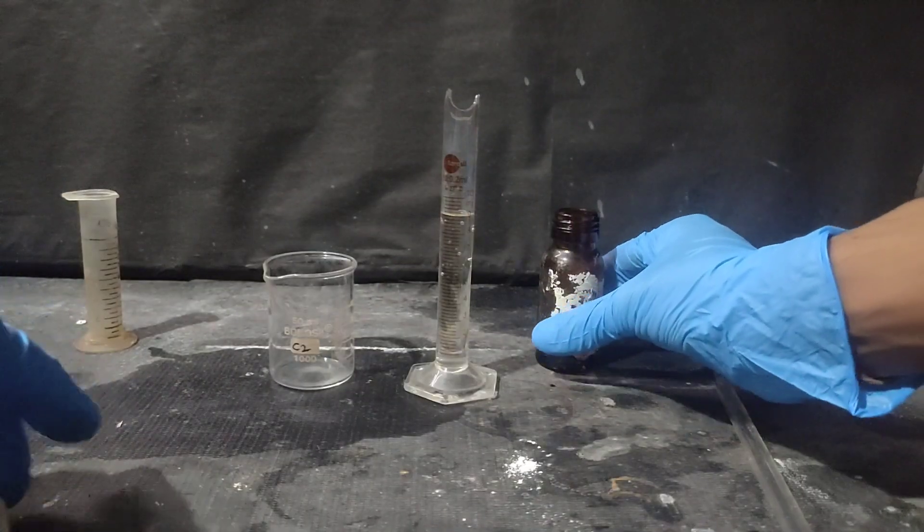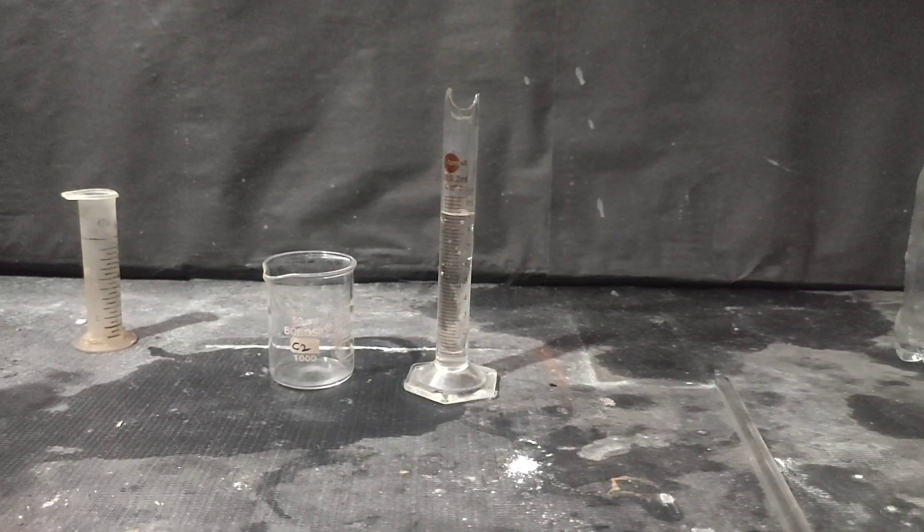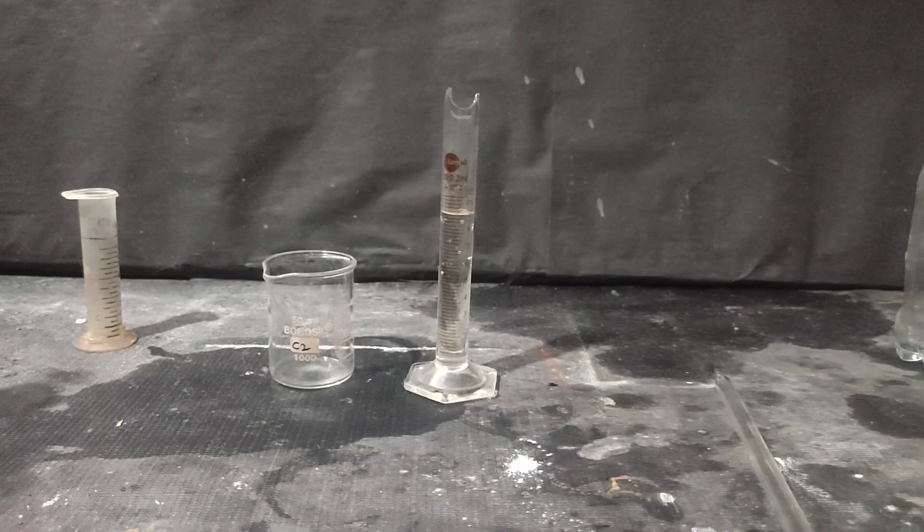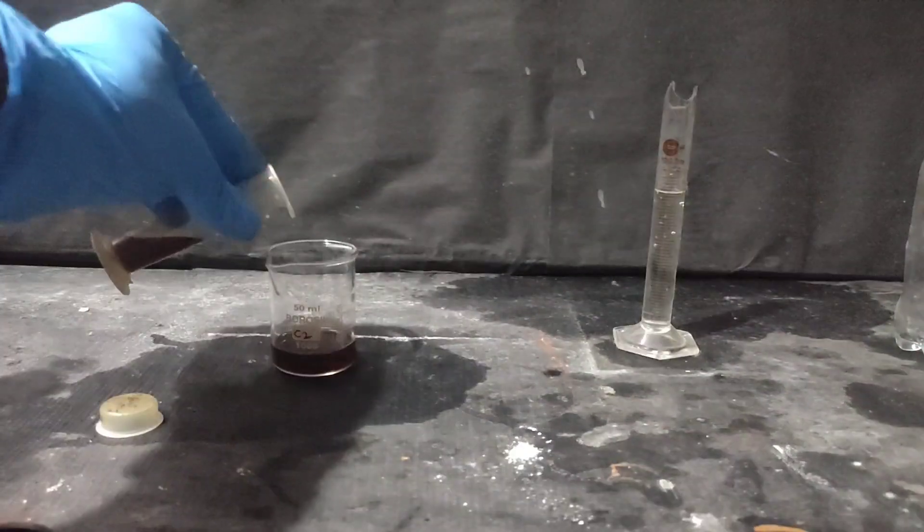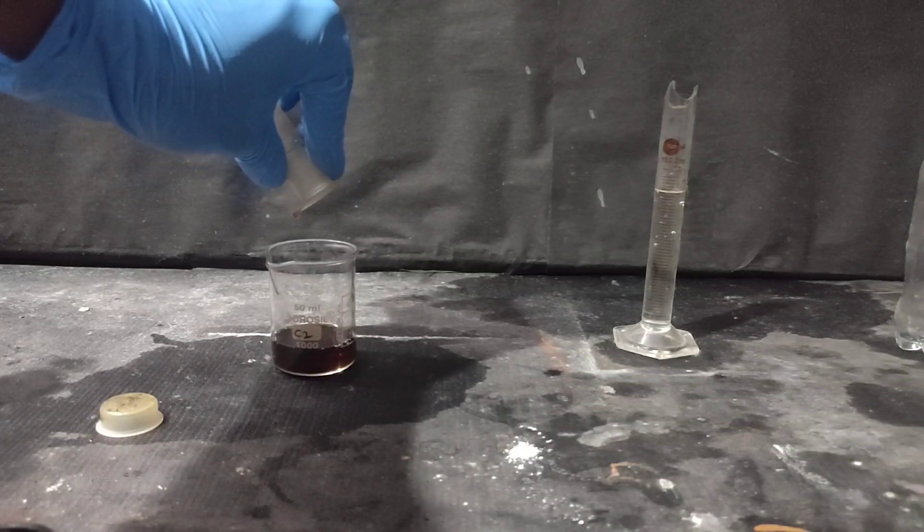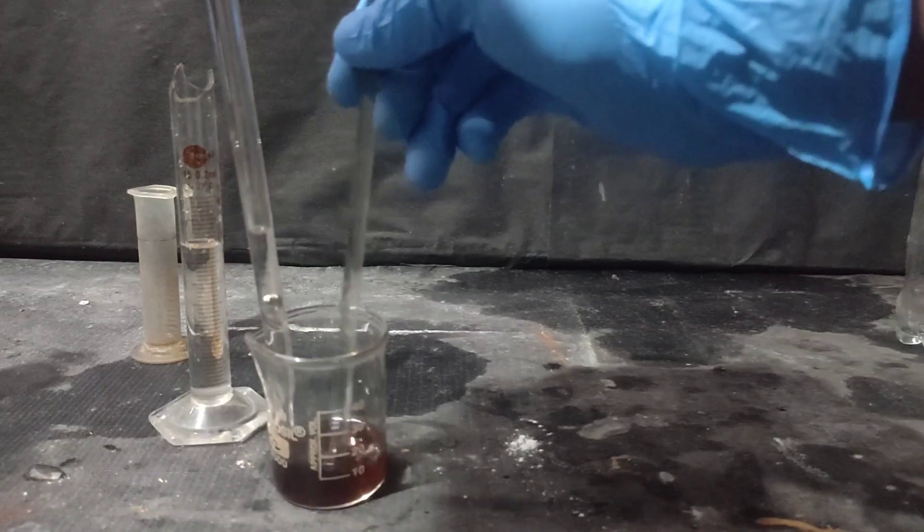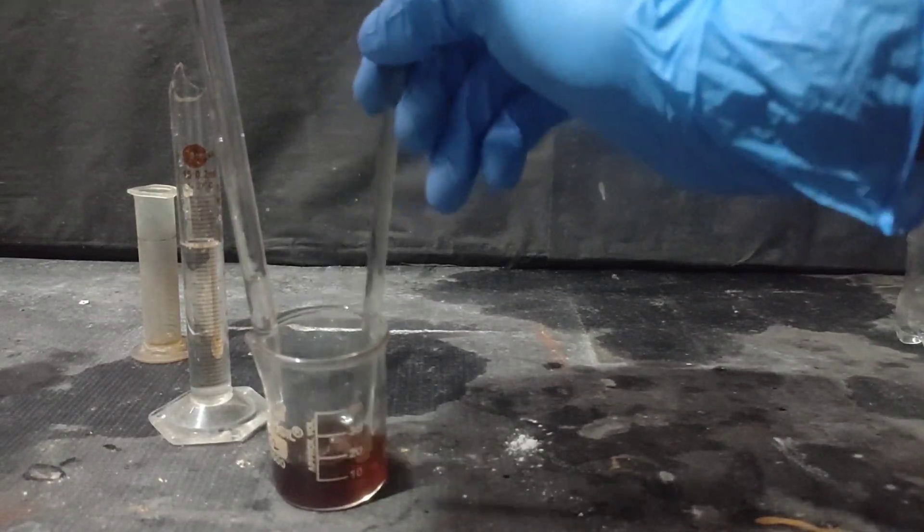First, I have to make nitrating mixture. For that, I am taking 9 ml of concentrated nitric acid and 13 ml of concentrated sulfuric acid. I started adding nitric acid slowly to concentrated sulfuric acid drop-wise with constant stirring.